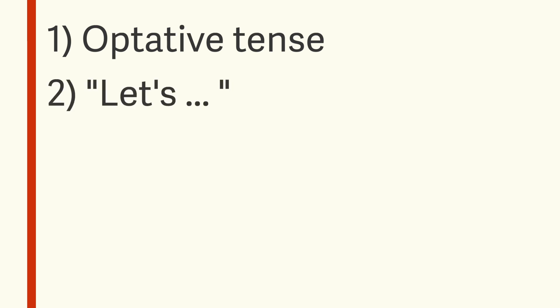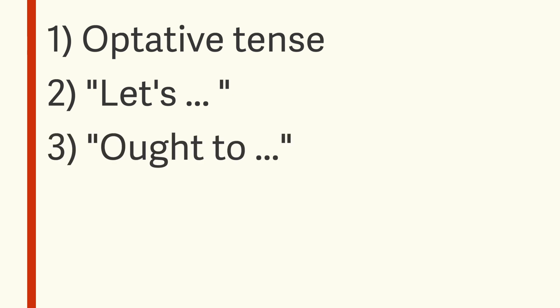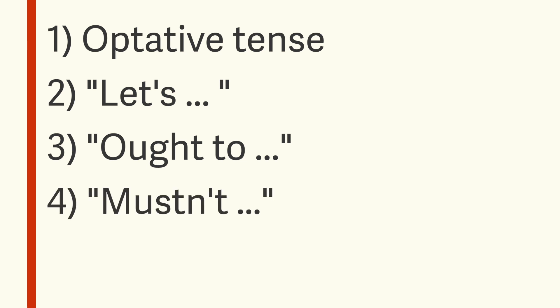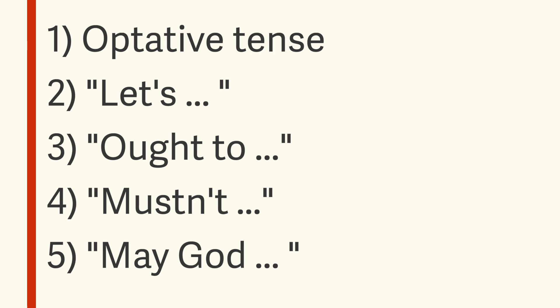This is going to let you say things like 'let's go,' 'you ought to go,' and 'she mustn't go.' Specifically, we're going to cover: first, what I mean by optative tense; then how to use it to say things equivalent to 'let's' or 'let's not'; then how to use it affirmatively for 'ought to' or 'should'; then negatively for 'mustn't'; and finally how the optative figures into benedictions.